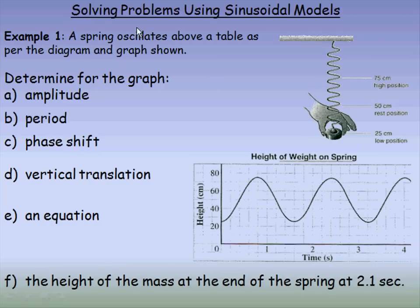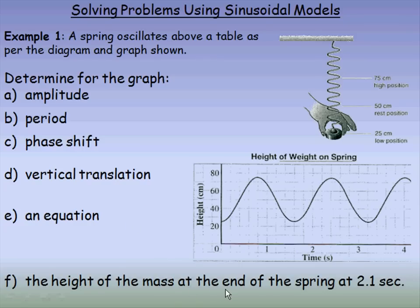This PowerPoint will show how to solve some problems using sinusoidal models — models involving sine and cosine curves. In the first example we have a spring oscillating above a table. The rest position is 50 centimeters above the table. It's stretched down so it's only 25 centimeters above the table — that's its low position — and it oscillates between 75 and 25 centimeters above the table. We're asked to determine the characteristics of the graph, write an equation, and then answer the question at the bottom.